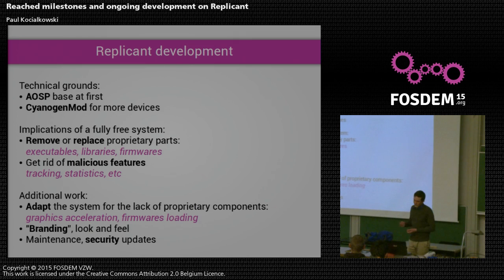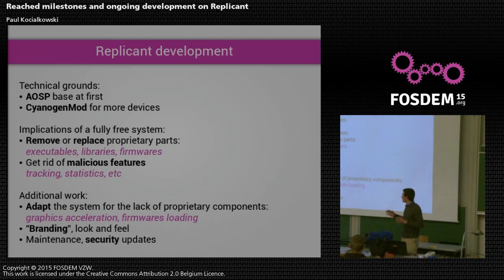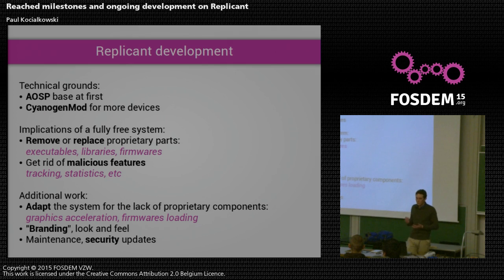That's why we decided to switch to CyanogenMod, which is another community Android version that supports a whole lot more devices across a really wide range of different manufacturers. It's more interesting for us because it gives us more devices to choose from when we want to add support to Replicant.